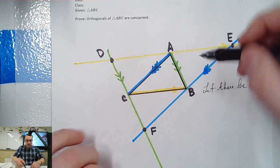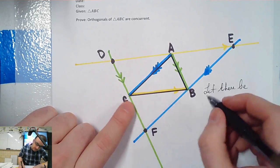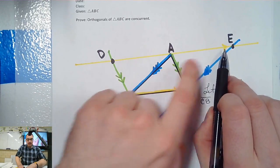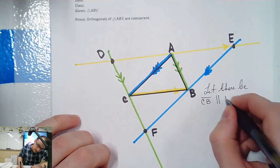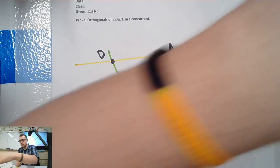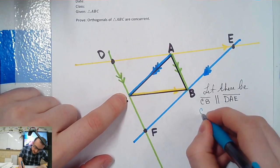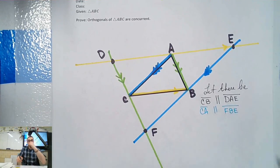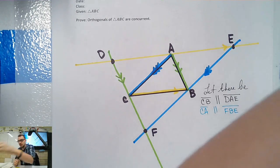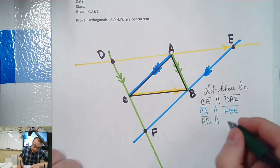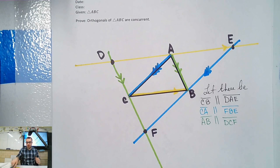So let there be: I want CB to be parallel to this new line I created — D, A, E. We say all three so we know it goes through A. Let's do the blue one next: let there be CA parallel to F, B, E. And then for the green: we want AB parallel to D, C, F. So that was our first step — we just created parallel lines. Now we know by the Medial Triangle Theorem converse — that's a medial triangle — so this will be half of the opposite side.